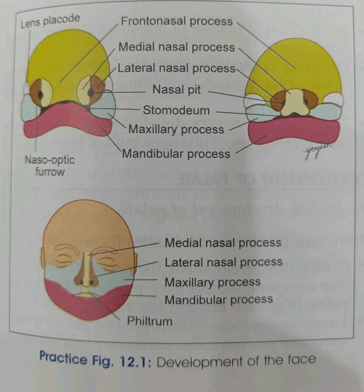Hence the skin of the upper lip is supplied by the maxillary nerve. The muscles of the upper lip are derived from the second pharyngeal arch, and hence are supplied by the facial nerve.